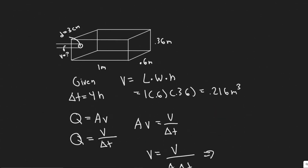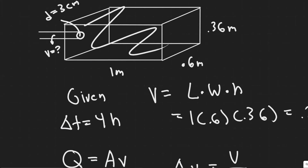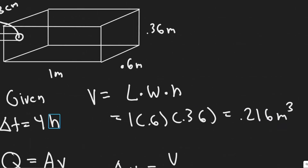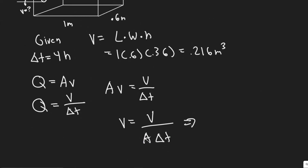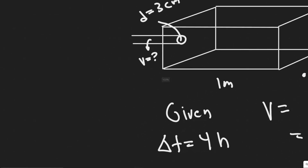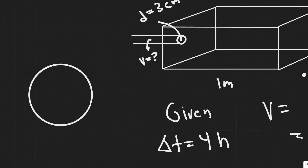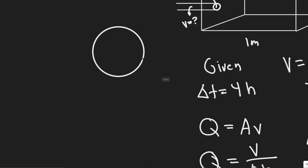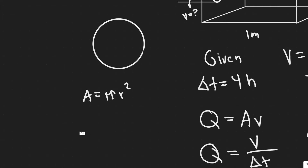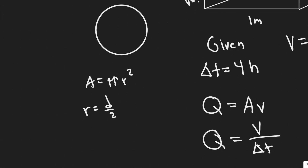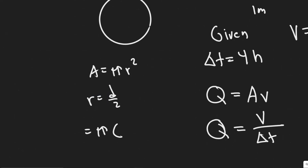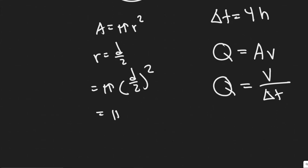Next, we want the change in time. We know we're going to be filtering out this volume once every 4 hours, so delta T equals 4 hours. Then A is the cross-sectional area of the tube. Since it's a tube, the cross-section is a circle. The diameter is 3 centimeters, and the area for a circle is π r². Since we're using diameter, radius equals diameter over 2, so the area becomes π times (d/2)² which simplifies to π over 4 times d squared.